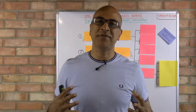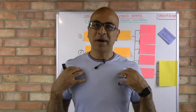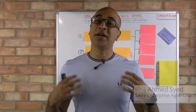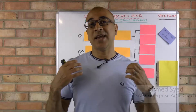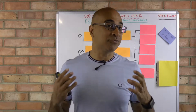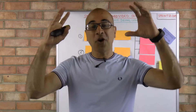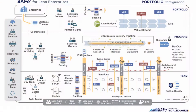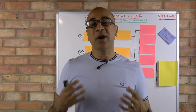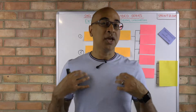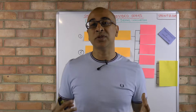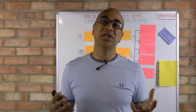Hi and welcome to SAFe in the real world. I'm Ahmed Saeed and today we are going to be talking about the enterprise architecture role in SAFe. This role is really important — it sits at the top of the scaled agile framework big picture at the portfolio tier, and guides the enterprise on what architecture is going to be needed to support its vision. In my opinion it's one of the most impactful roles in terms of enabling an organization for agility.